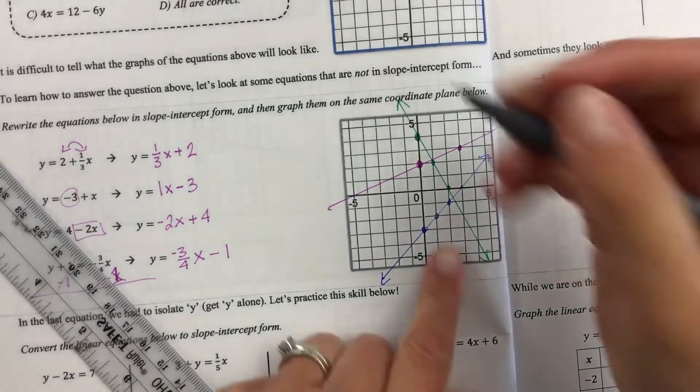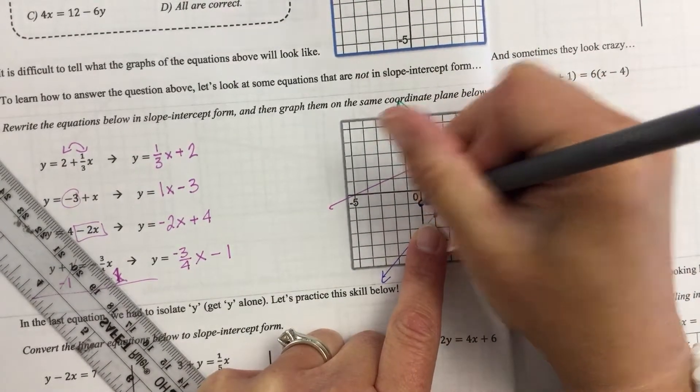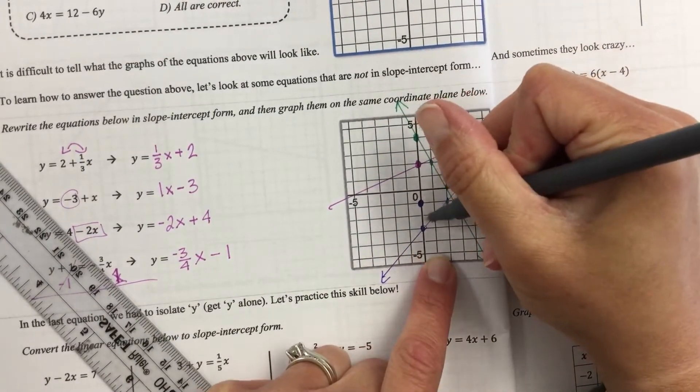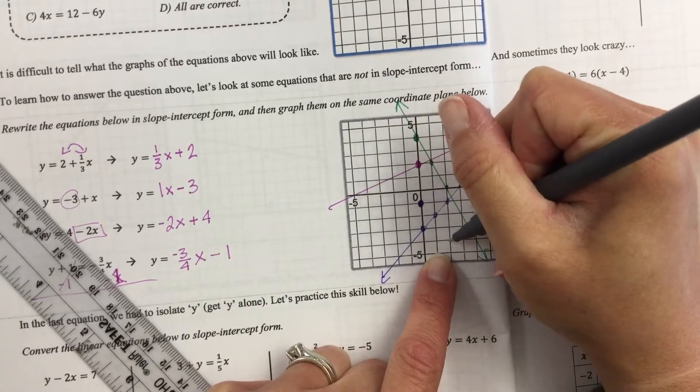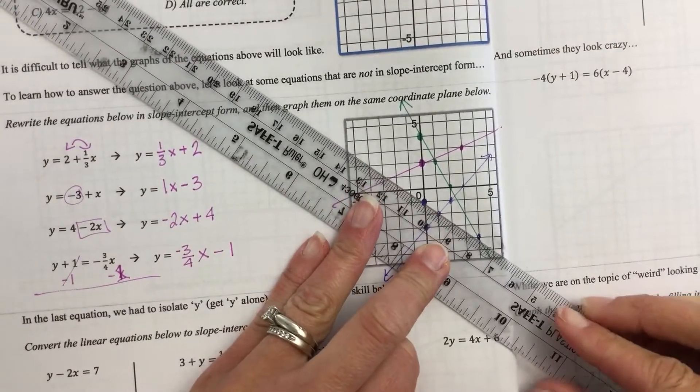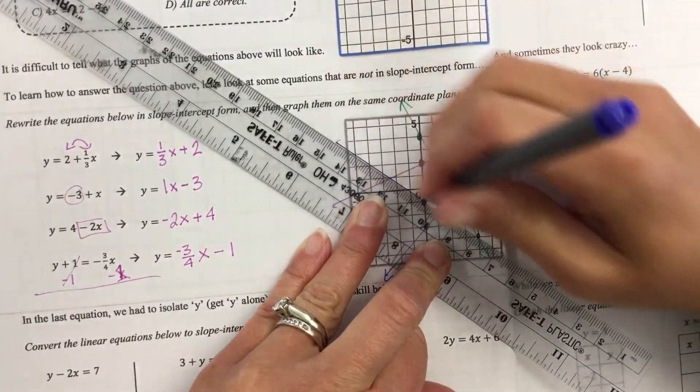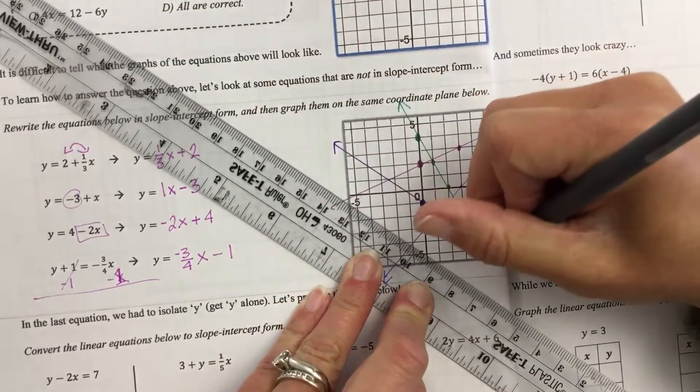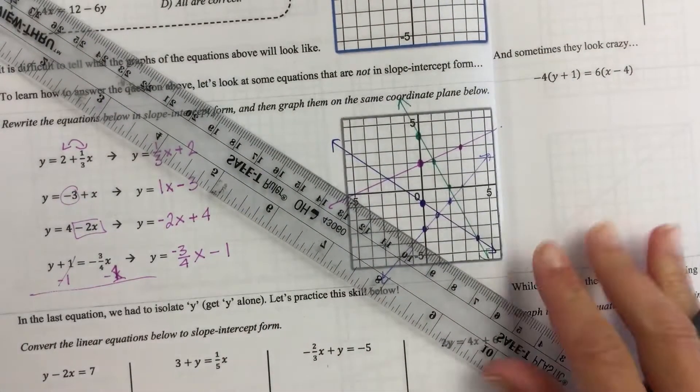You can see how much faster graphing has become for us. The last one is at negative 1, so it starts right here. And then down 3, 1, 2, 3, over 4, 1, 2, 3, 4. So once it's in slope-intercept form, our graphing gets much quicker.